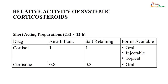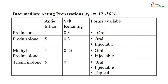We need to understand the relative activity of systemic corticosteroids by their half-life. Short-acting preparations — half-life less than 12 hours: cortisol is a potent anti-inflammatory with potent sodium-retaining properties; available orally, injectable, and as topical preparation. Cortisone is another, with anti-inflammatory potency of 0.8, has salt-retaining properties, and is usually available in oral formulation.